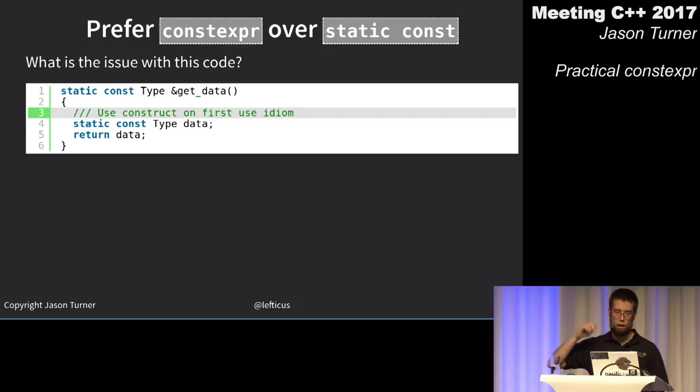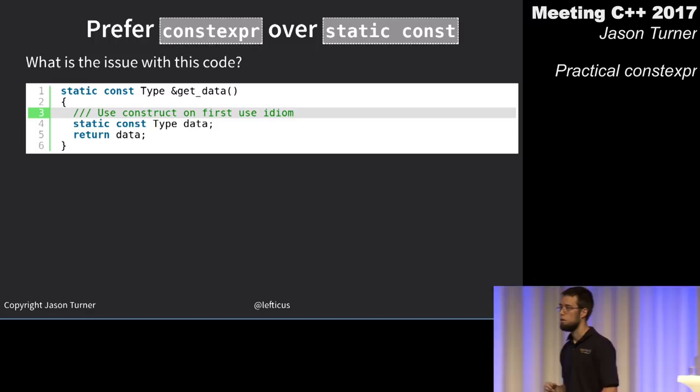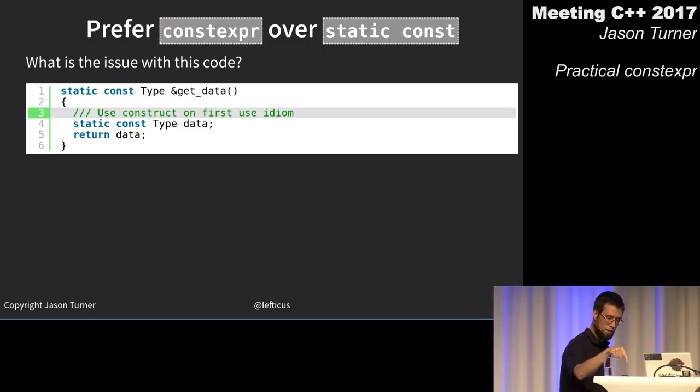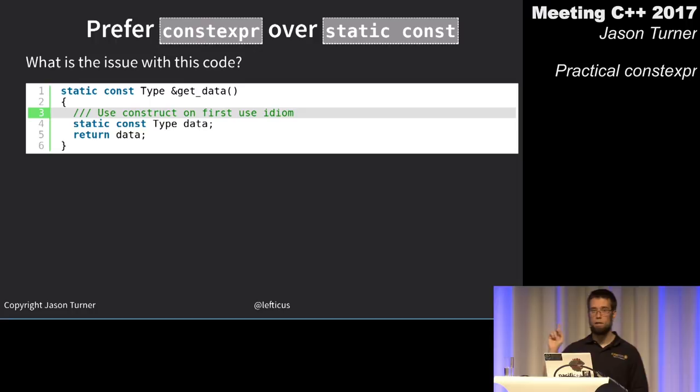constexpr should be the new static const. Go through your code: if you see static const, your goal should be to make that value constexpr and do whatever it takes to make the initializing functions constexpr. You'll see real savings — it avoids magic static cost and runtime initialization.